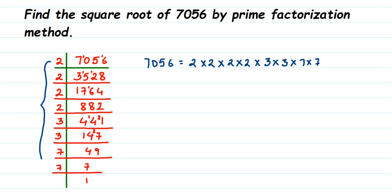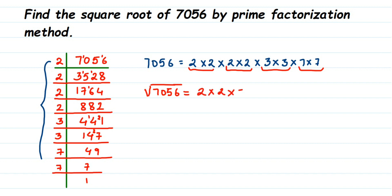You can see that all the prime factors are in pairs: the 2s are in pairs, 3 is in a pair, and 7 is in a pair. To find the square root, from each pair you take one factor and multiply them together. So the square root of 7056 = 2 × 2 × 3 × 7, taking one factor from each pair.